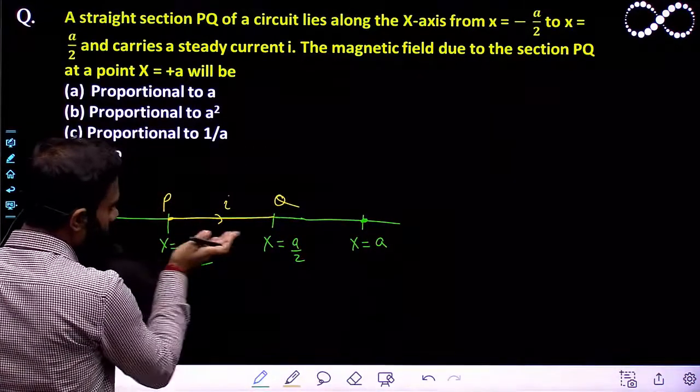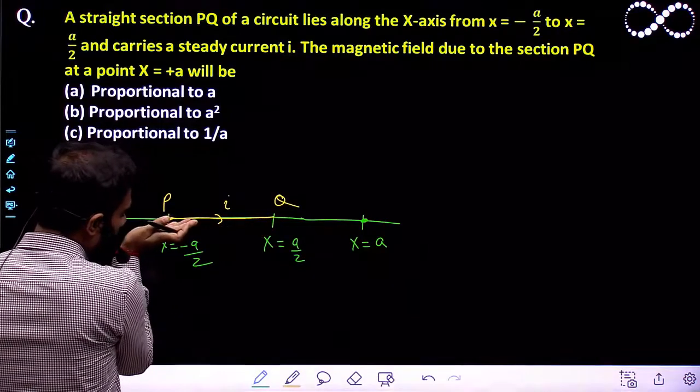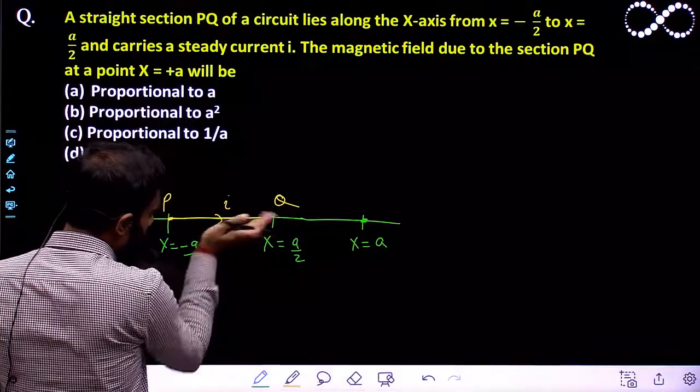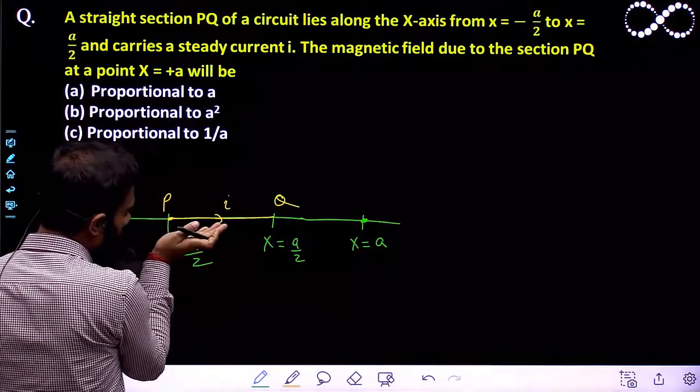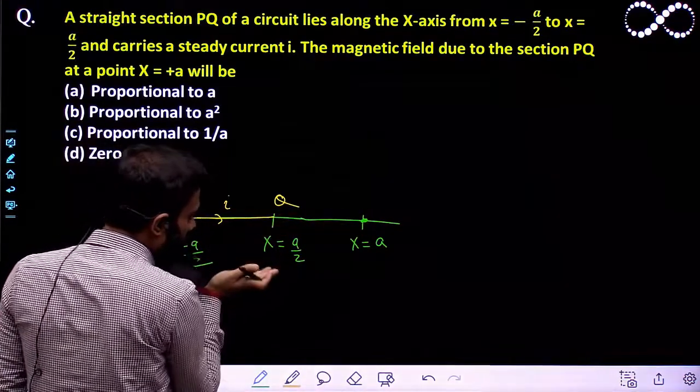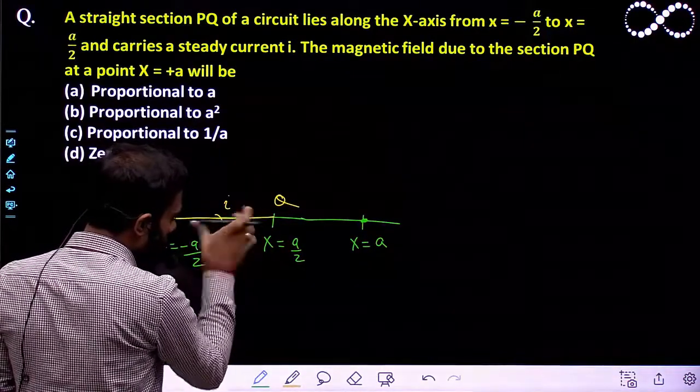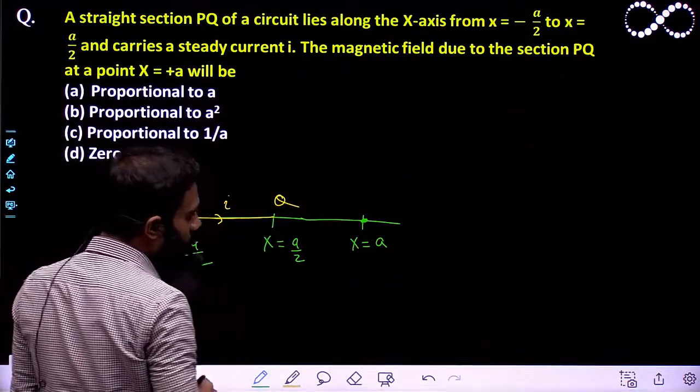If you will see, this point is lying right in the same line along which the current is flowing. This point is lying along the same line because there is no perpendicular distance of this point from this section PQ. So obviously the magnetic field will become zero here.